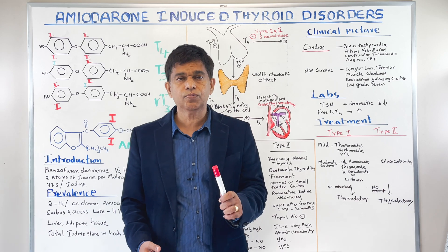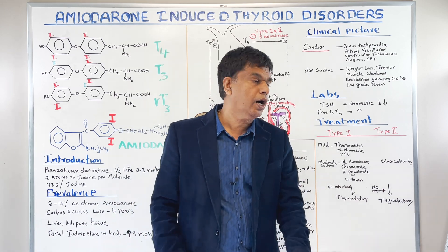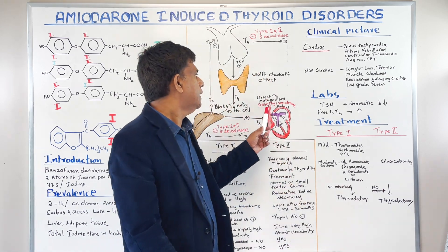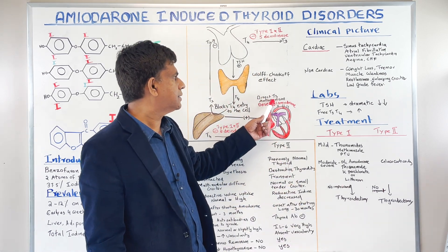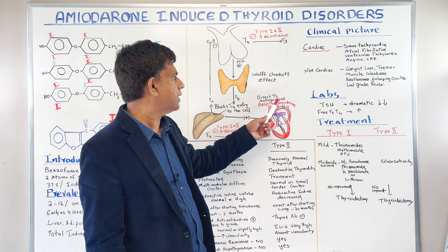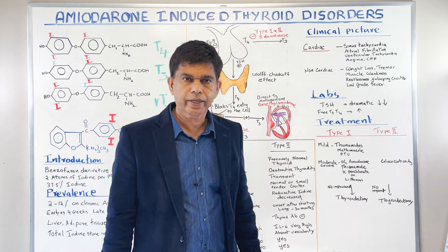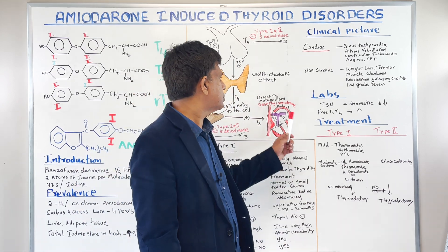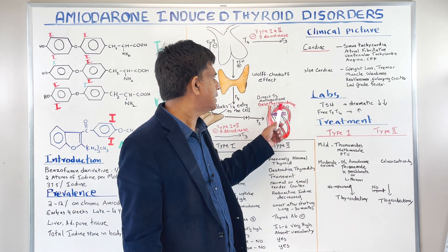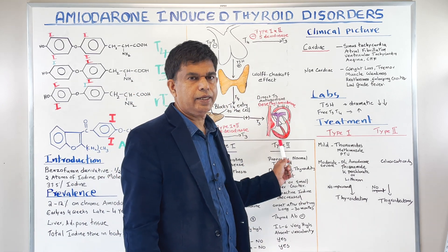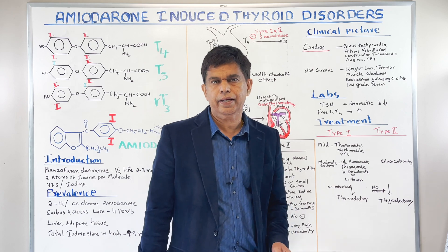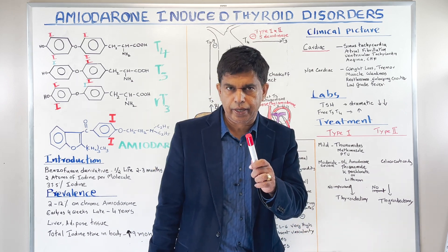One organ we have to be very careful about is the heart. There is direct T3 antagonism by a metabolic product of amiodarone called desethylamiodarone, and that's why a lot of cardiac complications can occur.